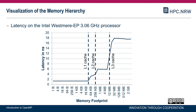What does that mean for us as programmers? In most cases this is transparent because the system handles the transfer of data from memory via the caches to the processor and back. But we can see the implications in the execution speed of our program. This figure shows the performance difference between the L1, L2, and L3 caches on an Intel Westmere processor, where you can see sharp differences in performance measurement between the different caches.